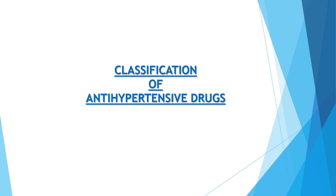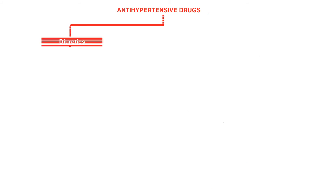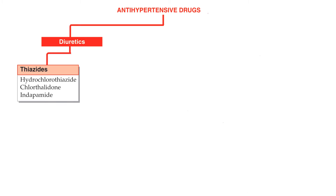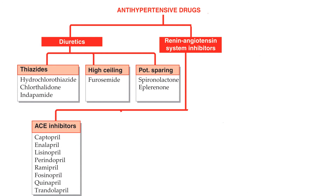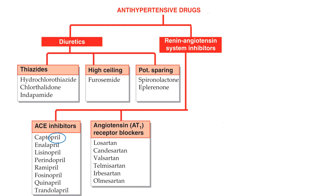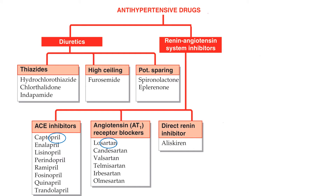Let's learn the classification of antihypertensive drugs. The first group is diuretics — three types are used: thiazide diuretics like hydrochlorothiazide, chlorthalidone, and indapamide; loop diuretics like furosemide; and potassium-sparing diuretics like spironolactone and eplerenone. The second group is renin-angiotensin system inhibitors — ACE inhibitors like captopril, enalapril, lisinopril (names end with '-pril'); angiotensin receptor blockers like losartan, candesartan, valsartan (names end with '-sartan'); and direct renin inhibitor like aliskiren.